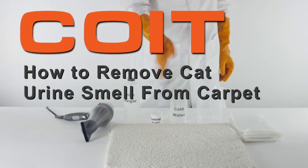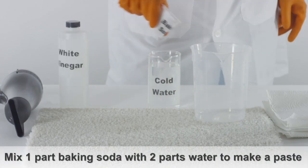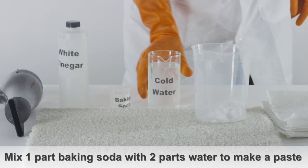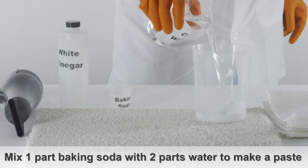How to remove cat urine smell from carpet. Using one part baking soda and two parts water, combine the two ingredients into a small bowl to make a paste.